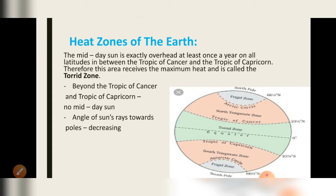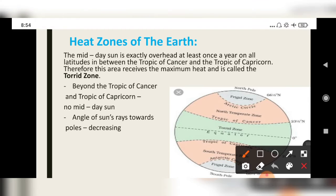Heat zones of the earth: on the basis of their characteristics and depending on the motion of the sun, the earth is divided into heat zones. The mid-day sun is exactly overhead at least once a year on all latitudes between the Tropic of Cancer and the Tropic of Capricorn. Therefore, this area receives the maximum heat and is called the torrid zone. The sun moves between these two lines.